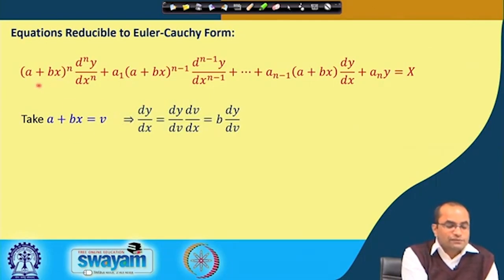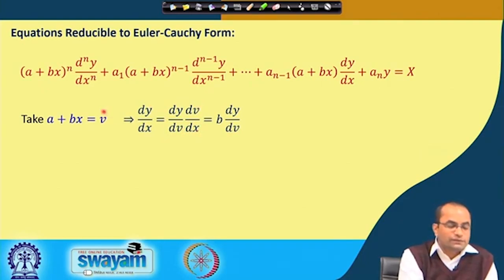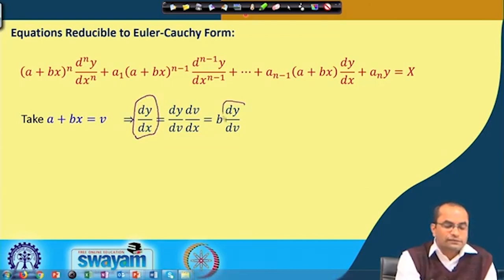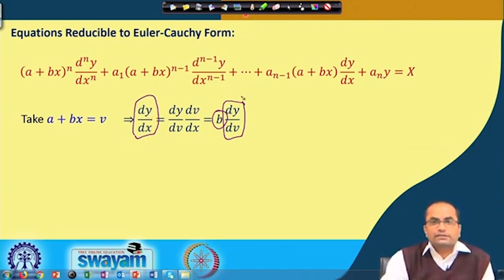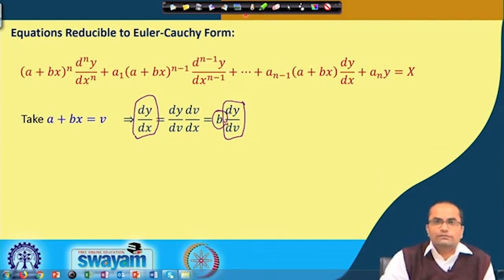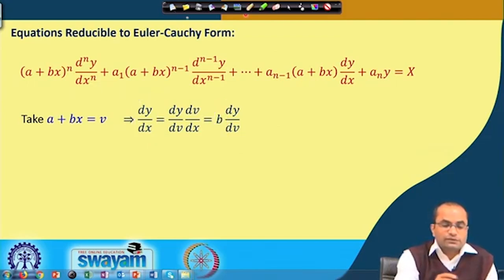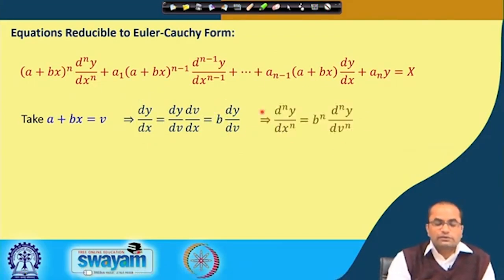With the substitution a + bx = v, dy/dx = (dy/dv)·(dv/dx) = b·(dy/dv). Similarly d²y/dx² = b²·(d²y/dv²), and the nth order derivative gives b^n·(d^n y/dv^n). So each derivative picks up a factor of the appropriate power of b.